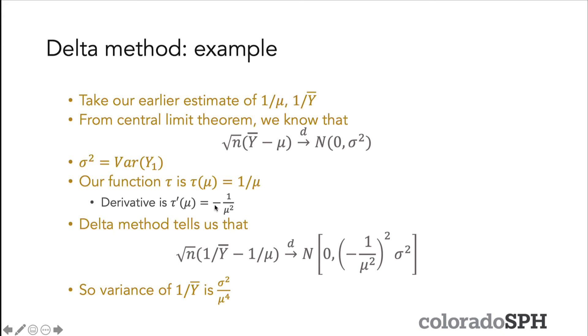Then by the delta method, we have that the asymptotic variance of 1/Ȳ is given by the derivative of τ(μ) times σ², which is equivalent to σ²/μ⁴.